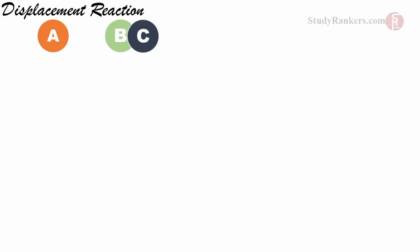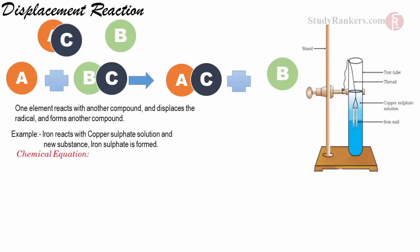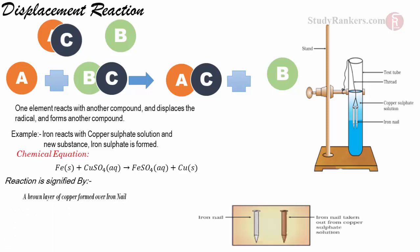In a displacement reaction, as the name suggests, one element displaces another from its chemical compound. Iron reacts with copper sulphate solution and a new substance, iron sulphate, is formed. The chemical equation: Fe(s) + CuSO4(aq) → FeSO4(aq) + Cu(s). A brown layer of copper forms over the iron nail — it is the copper metal displaced from CuSO4.